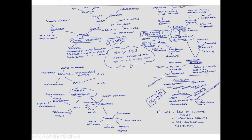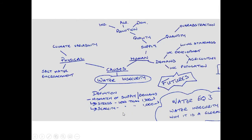Looking at the first section — water insecurity — you need to know the definition. Water insecurity is simply a mismatch of supply and demand where there is too much demand and not enough supply. Water stress is when there is less than 1,700 cubic meters of water per person, and scarcity is less than 1,000 cubic meters of water per person.